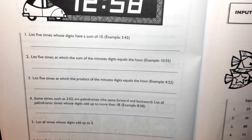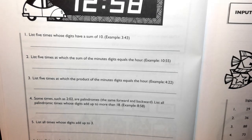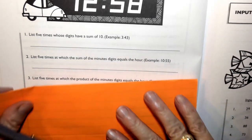Question number two says, list five times in which the sum of the minute digits equals the hour of time.